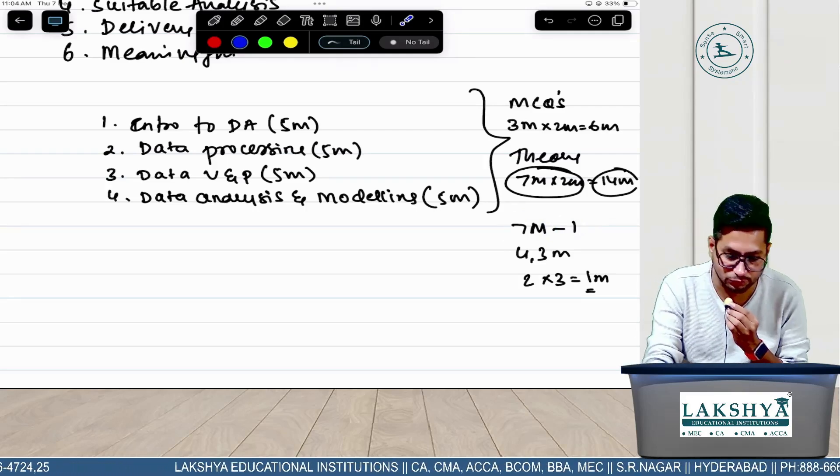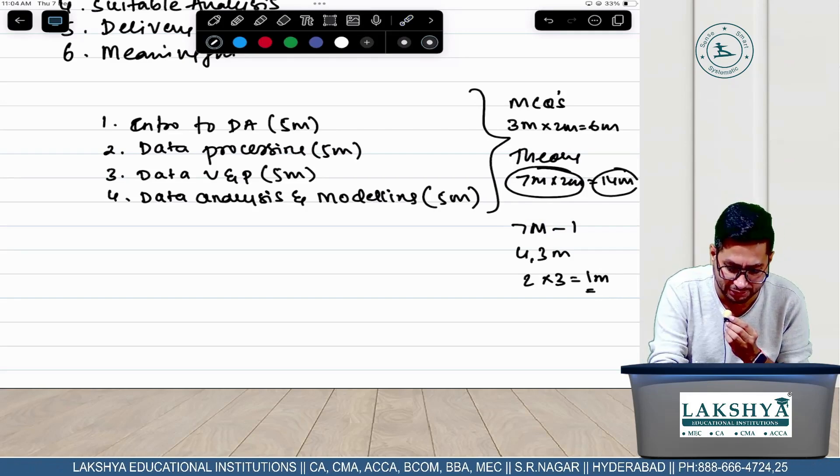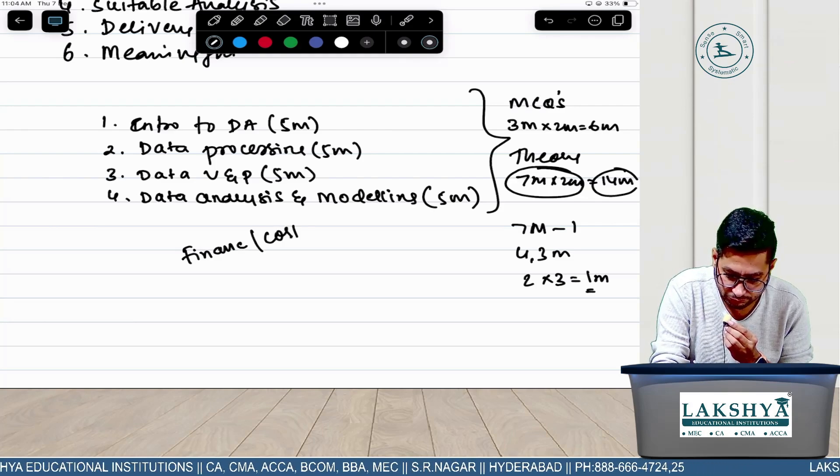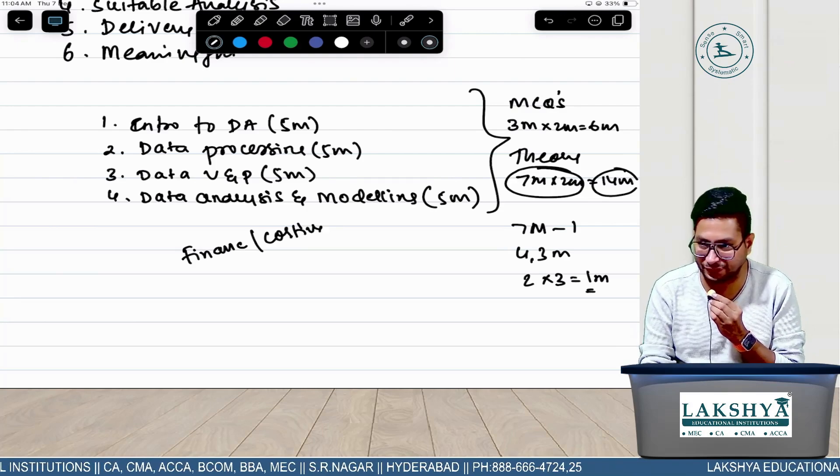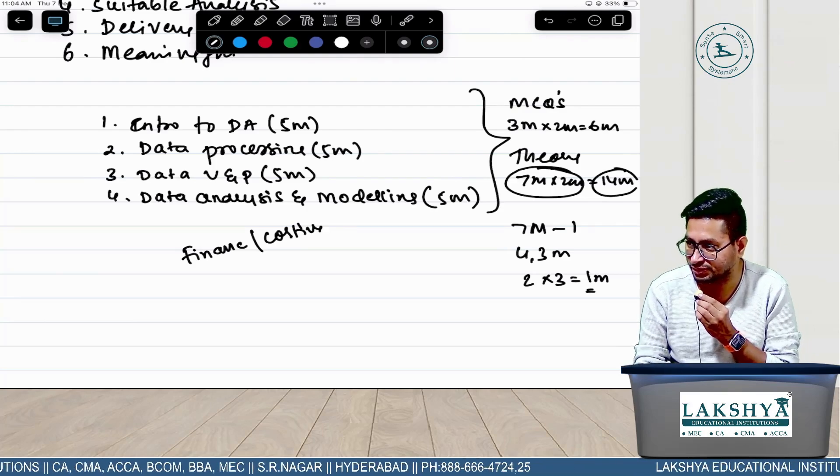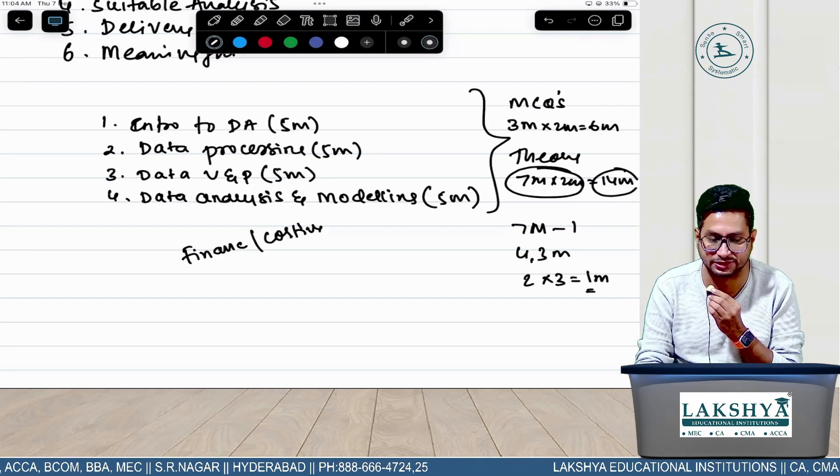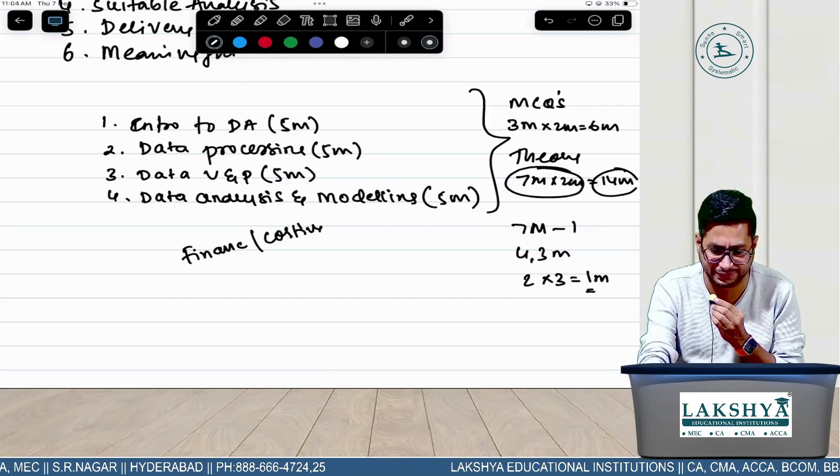Sometimes very small questions they can ask for 7 marks. Recently, I think June '23 or '24 was the first attempt of the new syllabus. In that they asked 'types of data' - remember data as per Finance and Costing?